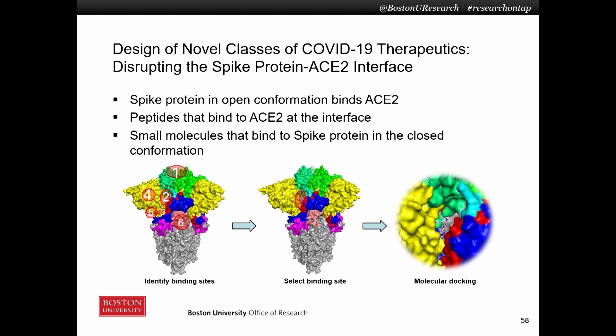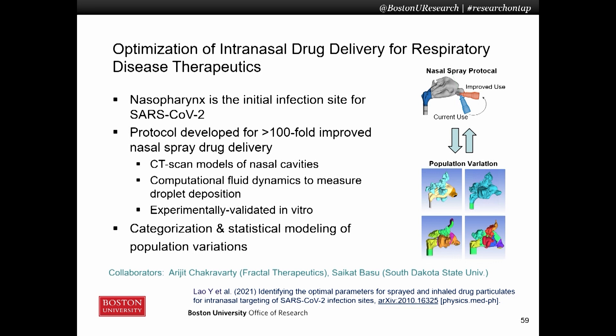We are in the early stages of designing novel classes of COVID-19 therapeutics, in particular those that disrupt the spike protein-ACE2 binding interface. The spike protein in its open conformation binds to ACE2, and many therapeutics currently in development aim to disrupt that interface by binding to spike in the open conformation. Instead, we are designing new agents with two distinct mechanisms of action: engineering peptides that bind to ACE2 at the interface instead of spike, and carrying out virtual screens for small molecules that bind to the spike protein in the closed conformation to prevent the transition to the open conformation and thereby prevent binding to ACE2.